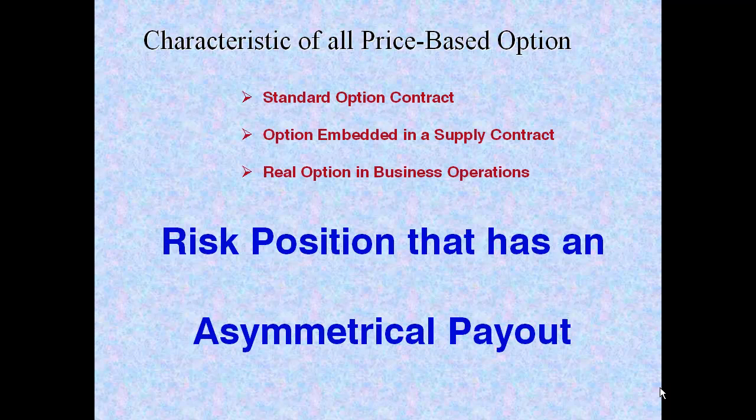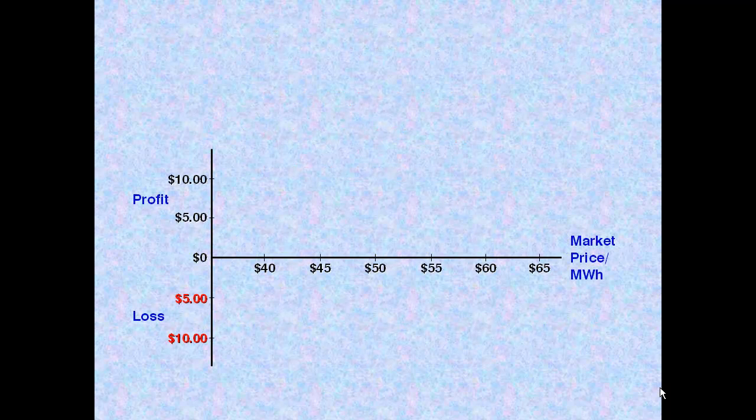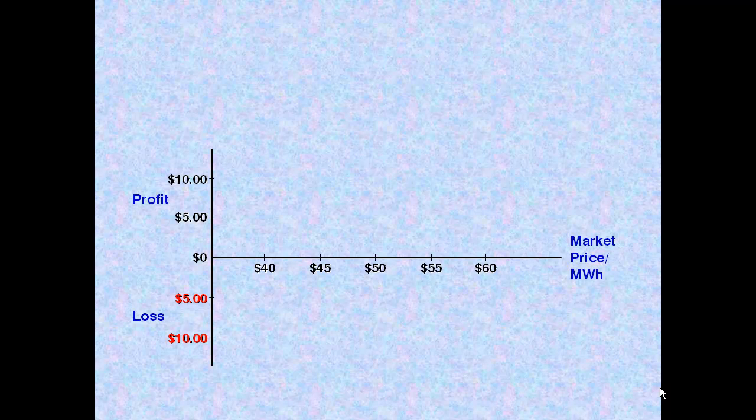So what the heck is this thing, this asymmetrical payout? Let's see if we can get a grasp of risk symmetries and asymmetries. It's actually pretty straightforward. This chart will map the payout of our risk position. What we want to know here is that for our risk position, do we earn or lose money at these varying market prices and, of course, how much. The vertical axis shows us how much.